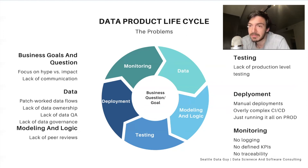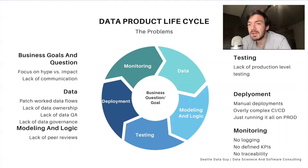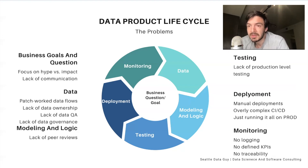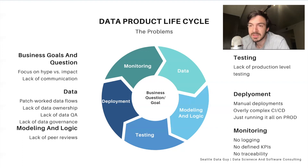For monitoring, the problems I usually see are no logging — so you can't track if or why something goes wrong — and no defined KPIs. You want to track something that ties to whatever the model is supposed to drive: sales, conversion rates, whatever it might be, just to ensure the model is doing what you think and improving the bottom line. If you're not tracking that, why did you build the model? There's also no traceability — being able to trace the exact variables and data inputs that went in to produce an output.